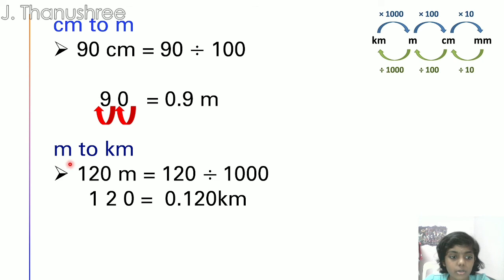Now we are going to do m to km. 120m equals to 120 divided by 1000. M to km divided by 1000. We are going to move the decimal point like this question: 1, 2, 3. Three zeros in 1000, so we move three times. The final answer is 0.120km.